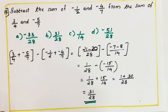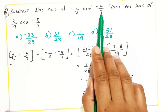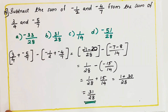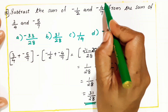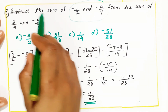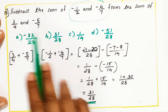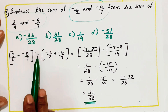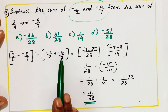See the next question: subtract the sum of minus 1 by 2 and minus 4 by 7 from the sum of 3 by 4 and minus 5 by 7. So I need to find the sum of both pairs of numbers first, then take the subtraction. From the sum means this number should come first: 3 by 4 plus minus 5 by 7, minus the sum of minus 1 by 2 plus minus 4 by 7.